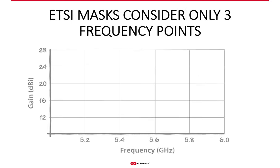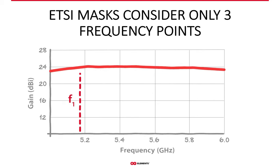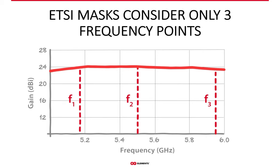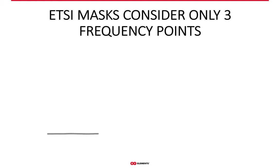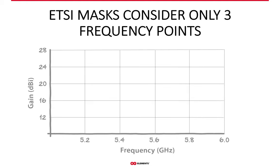ETSI masks are observed at three frequency points — at the beginning, the middle, and the end of the spectrum an antenna works in. That's an improvement, but the rest of the spectrum, which is rather wide in the case of WISP networks, is not included in the ETSI masks definition. So again, not a very robust measure.